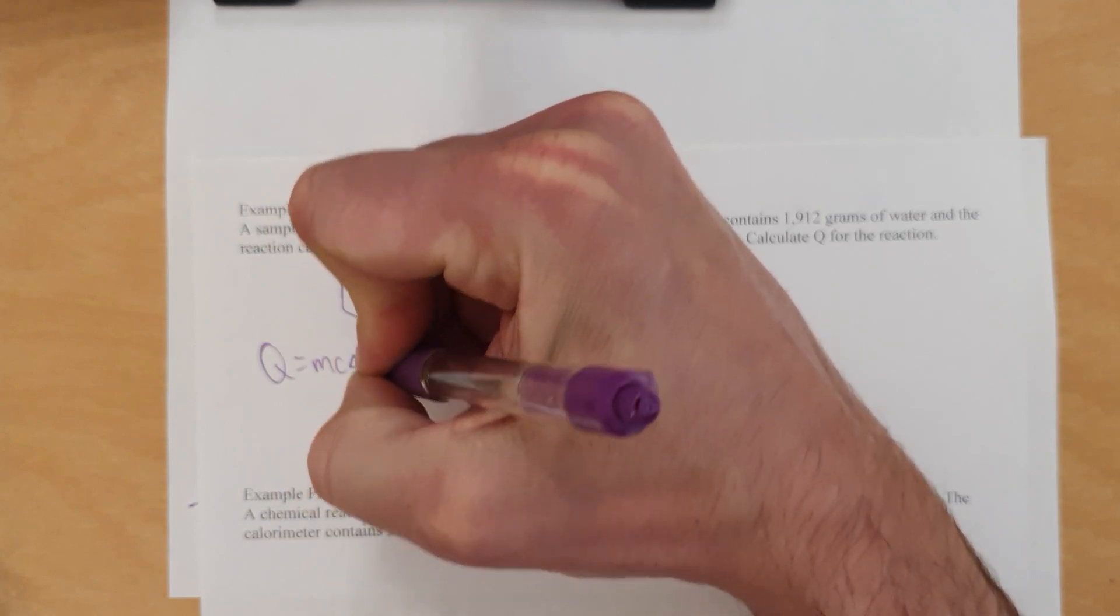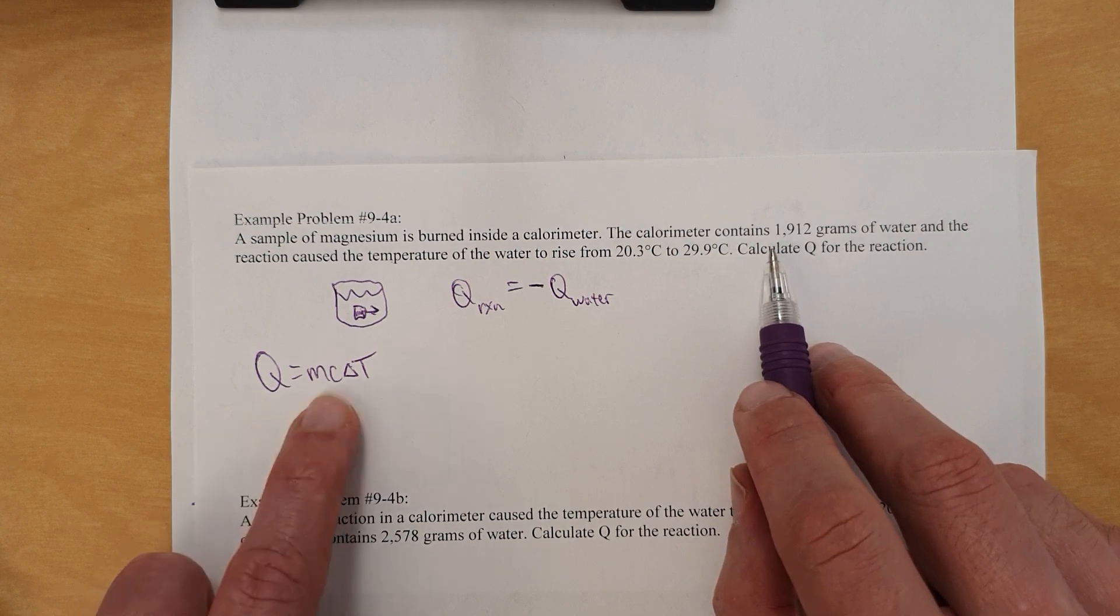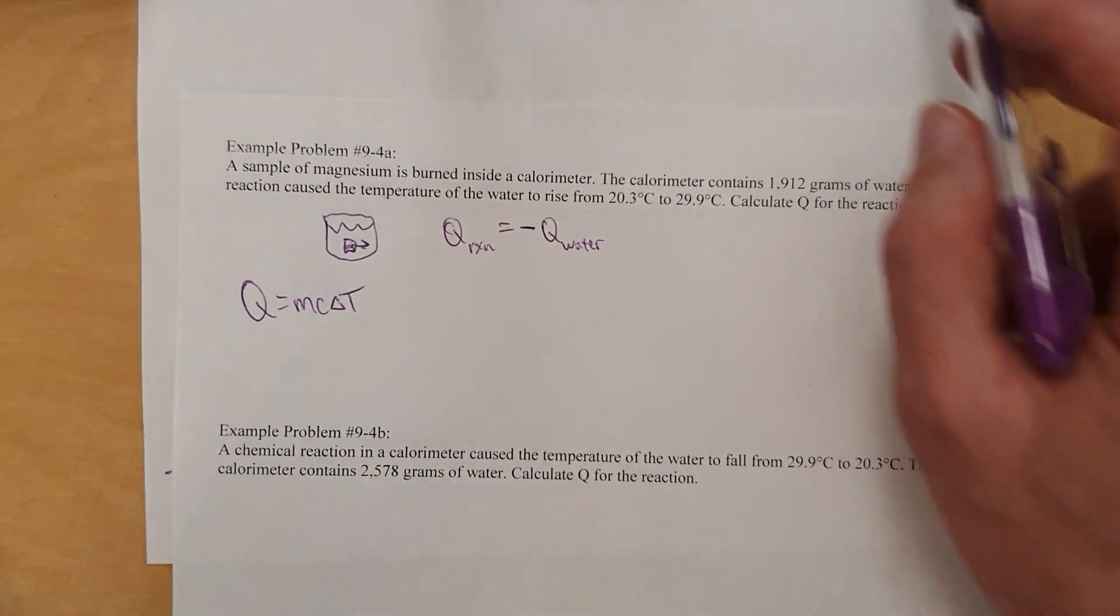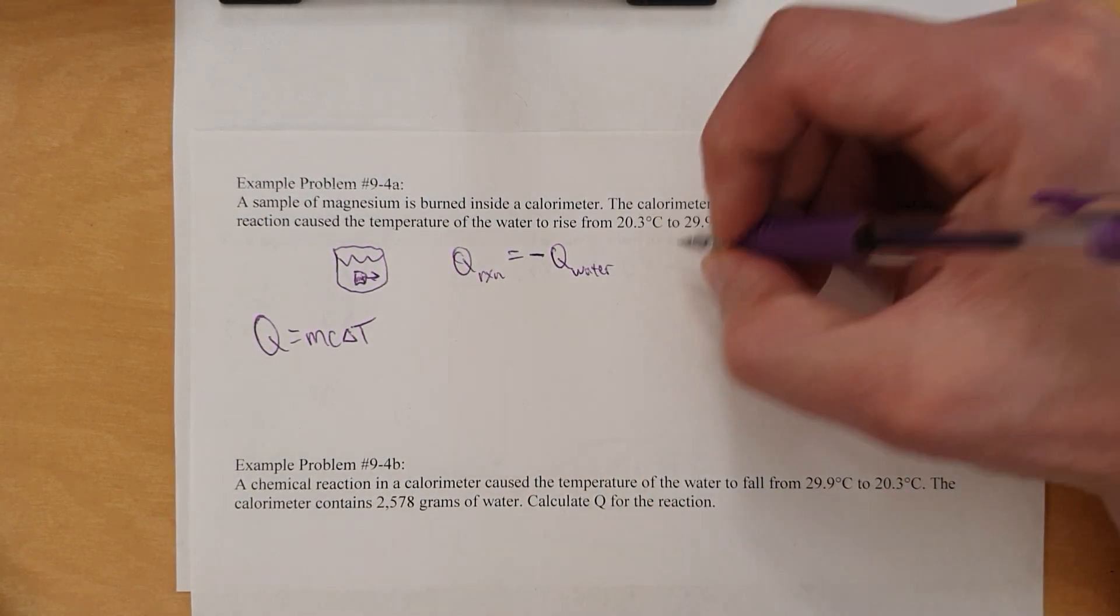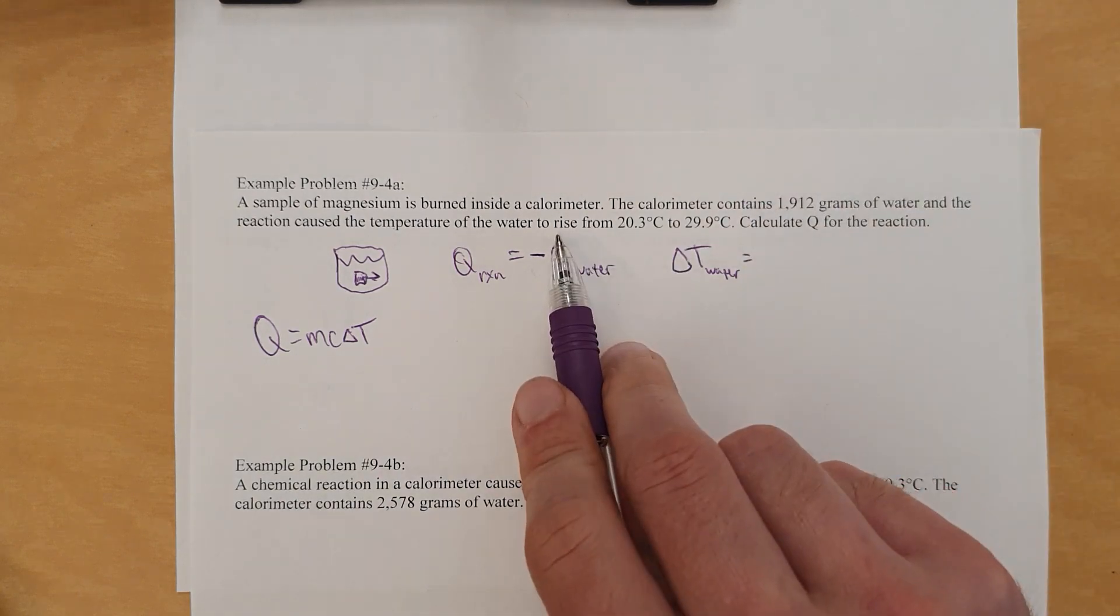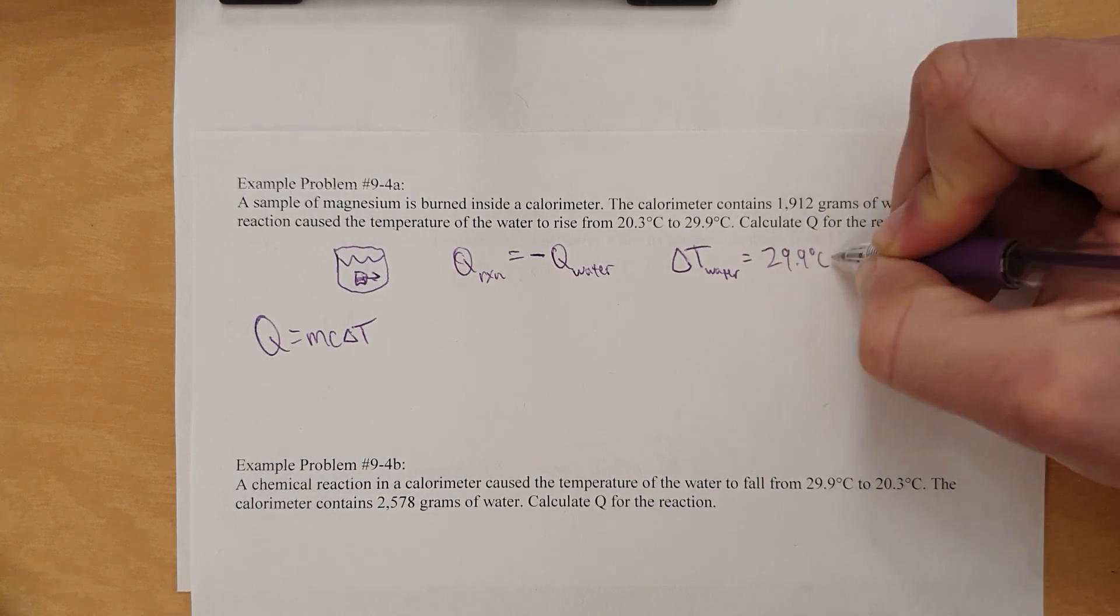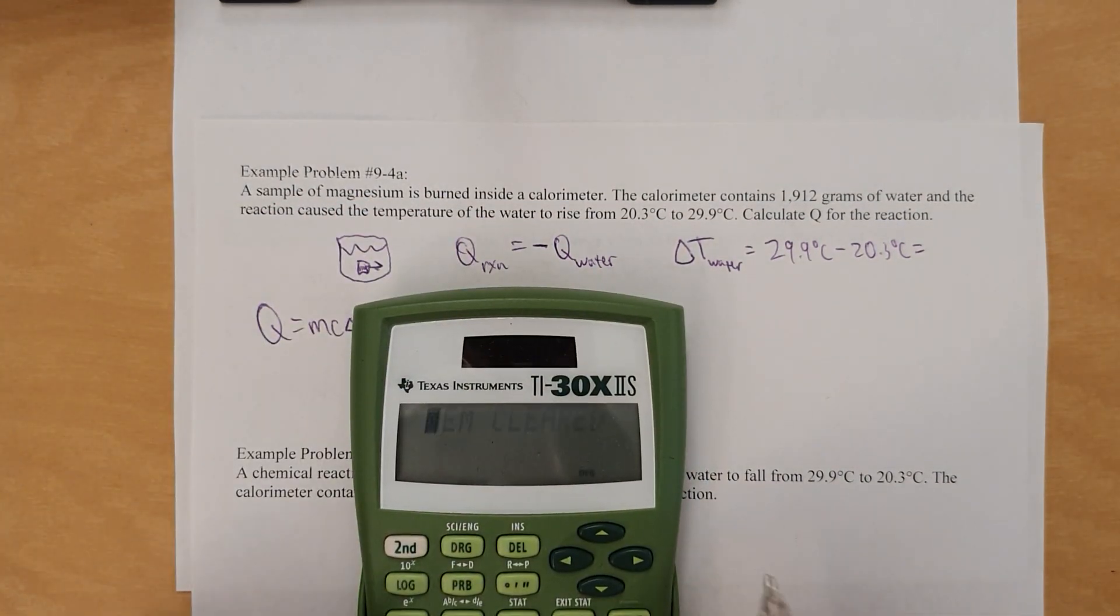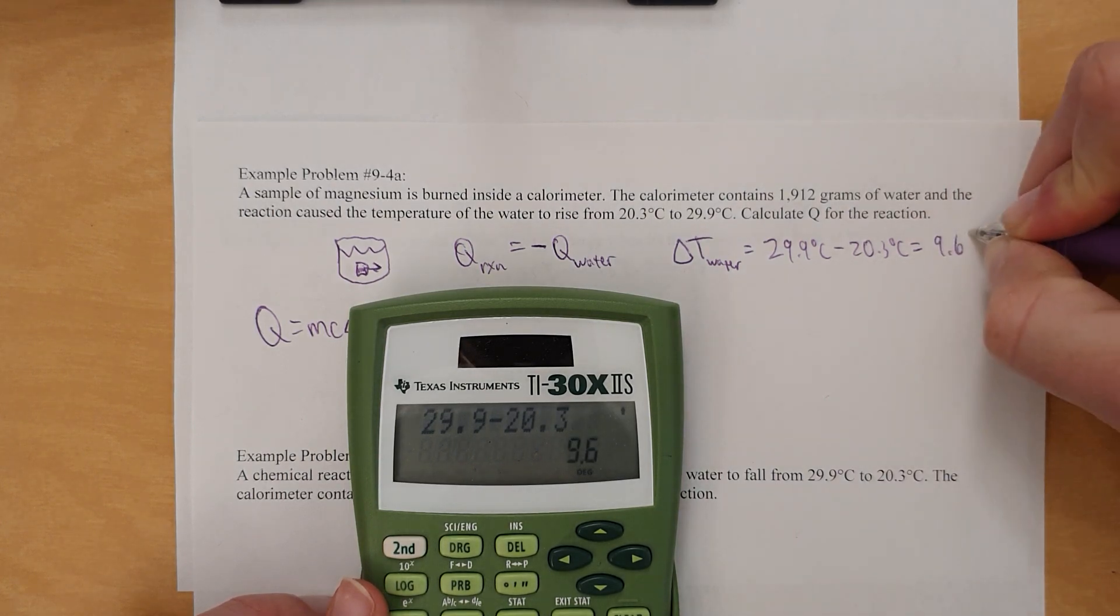So let's do Q for the water. Q equals mC delta T. Why? Because Q equals the, well, Q is the energy for the water. m is the mass of the water. We have it. C is the specific heat capacity of water. We have it on the list. And then the delta T is the change in temperature of the water, which we have right there. So let's look at that. What's delta T of the water? Delta T for water is the temperature rose, so we better make it positive. So we're going to take the bigger number subtract the smaller one. 29.9 degrees Celsius minus 20.3 degrees Celsius equals 29.9 minus 20.3 equals 9.6 degrees Celsius. And it's a positive 9.6, just to emphasize.